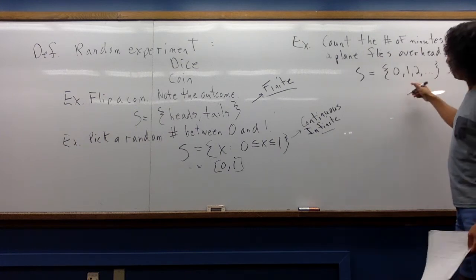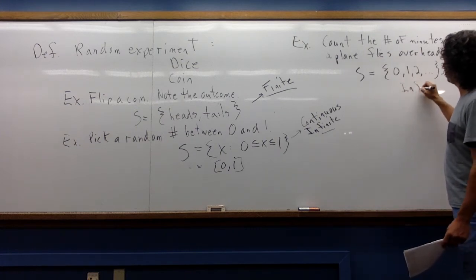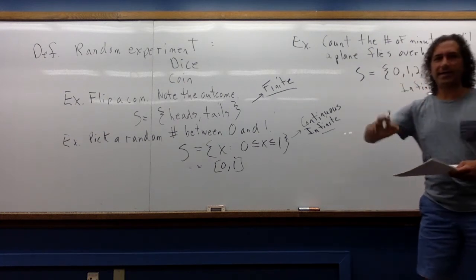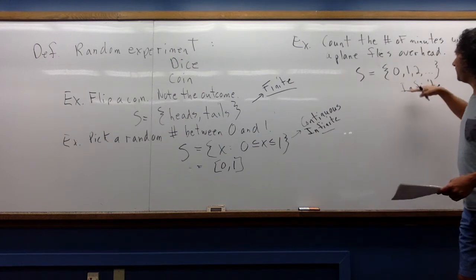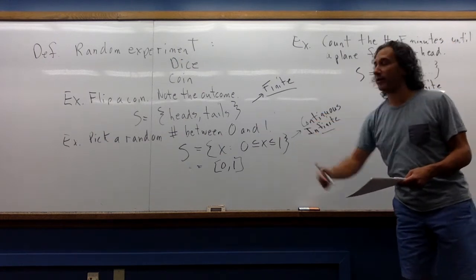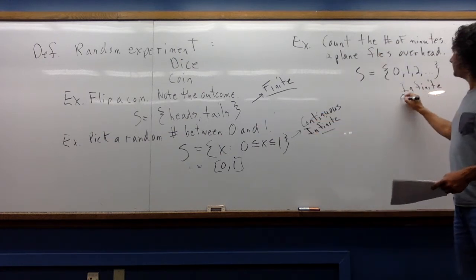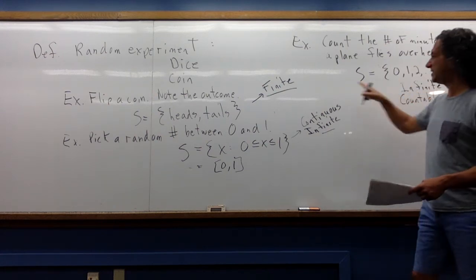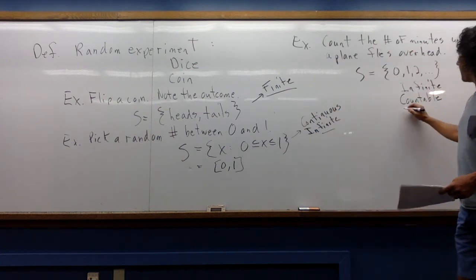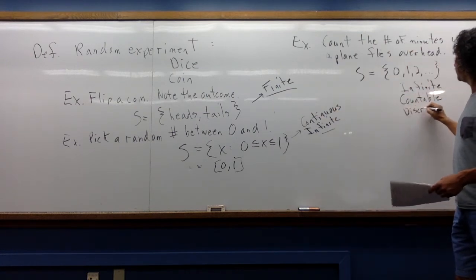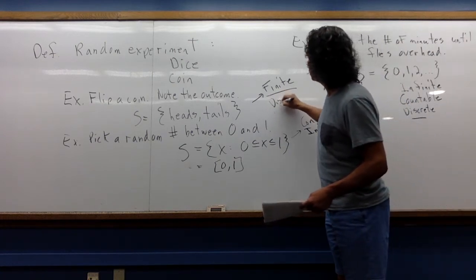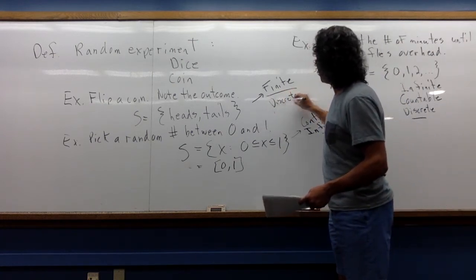This one's interesting. This one we could say is also infinite. It's infinite in a different sort of way. Here I can actually count out all of the values. I don't have to go on forever and ever. But we could say that this is infinite and countable. And this guy is also similar to this in that it's discrete. So this one is discrete, and discrete is when it's not continuous.